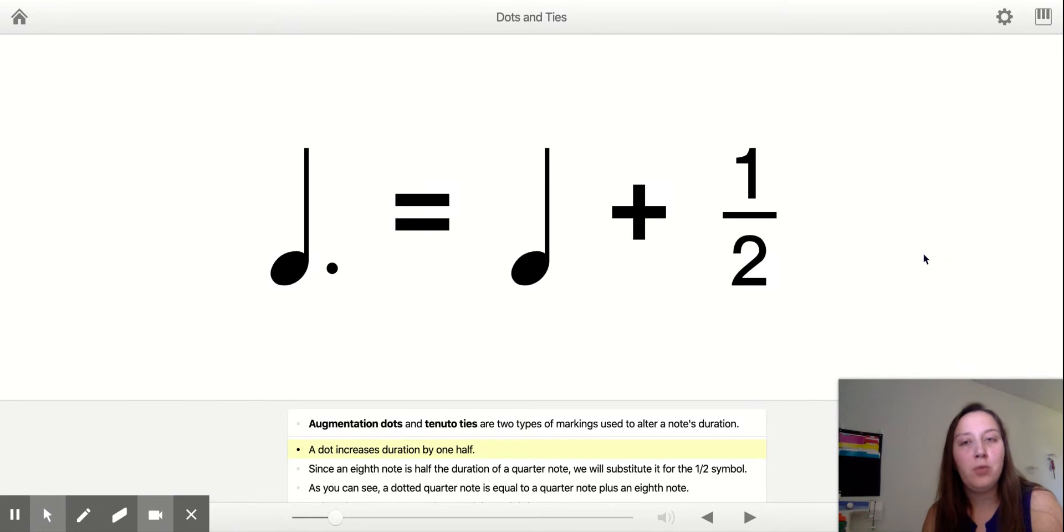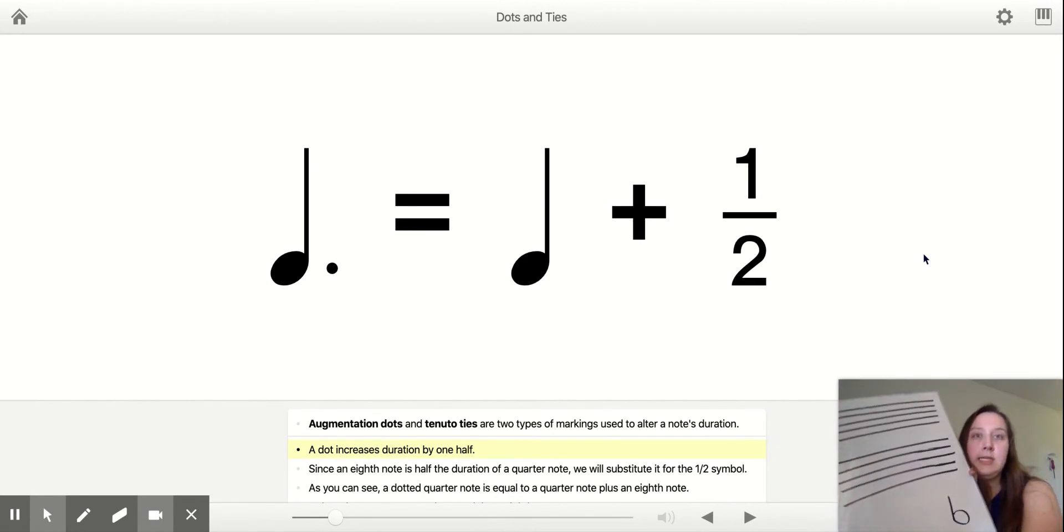A dot increases a note by one half. This example is a little bit hard, so before we look at that I'm going to show you something in this tiny little video down here. So if I have a half note, half note, if we're in 4-4 time, is 2 beats.